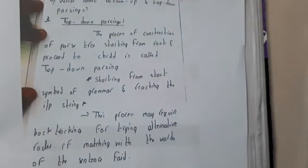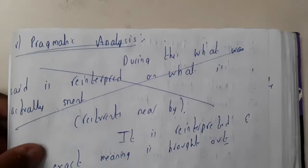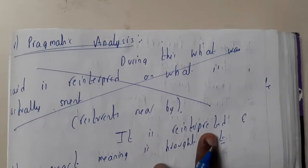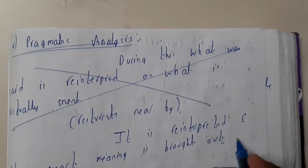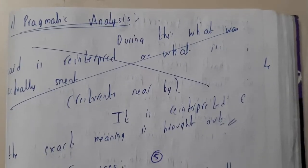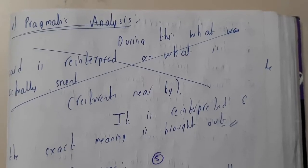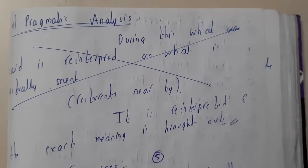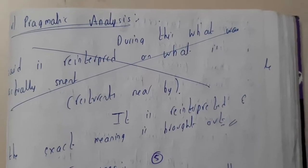The last stage is nothing but your pragmatic analysis. It is nothing but a re-interpretation of the exact meaning brought out. You'll be re-analyzing it—whether what did I do correct or wrong, did I do correct or wrong—so that you'll be checking again twice or once. So that comes under this pragmatic analysis.